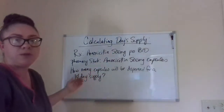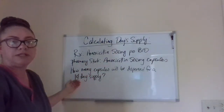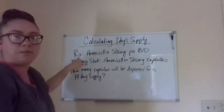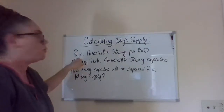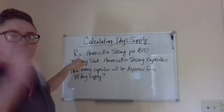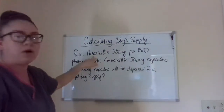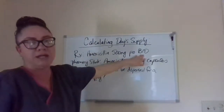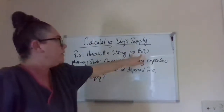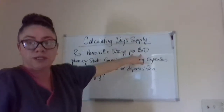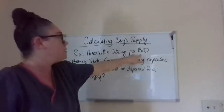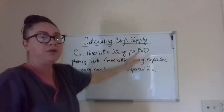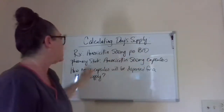So that says a 14-day supply. RX means what has been ordered — what the doctor has ordered. He has ordered amoxicillin 500 milligrams PO BID. This is why you must know your SIG codes: by mouth twice a day, so they're taking 500 milligrams twice a day.